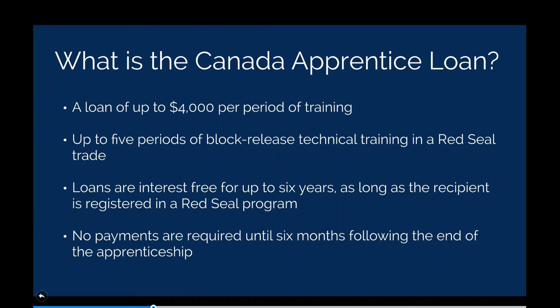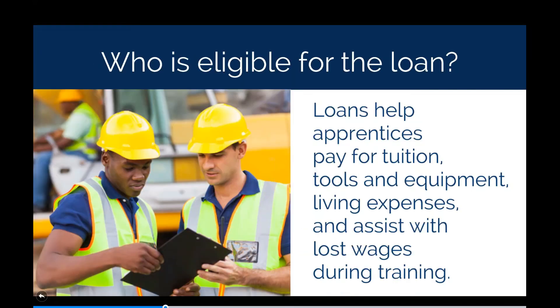Like regular student loans, the apprentice has six months after graduation before payments are required. Eligibility requires being registered in a Red Seal trade designated in their province or territory and attending block release technical training. There is no expectation around what the loan will be spent on — it's at the discretion of the apprentice. It could be used to offset living expenses, relocation for technical training, tuition, tools, daycare, food, or transportation.